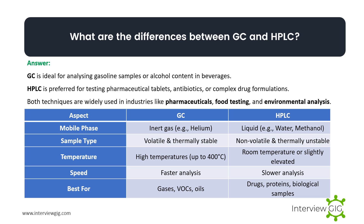What are the differences between GC and HPLC? GC is ideal for analyzing gasoline samples or alcohol content in beverages; HPLC is preferred for testing pharmaceutical tablets, antibiotics, or complex drug formulations. Key differences: GC uses an inert gas as mobile phase while HPLC uses a liquid; GC is for volatile and thermally stable samples while HPLC handles non-volatile and thermally unstable compounds; GC operates at high temperatures while HPLC runs at room temperature or slightly elevated; GC provides faster analysis. Both are widely used in pharmaceuticals, food testing, and environmental analysis.